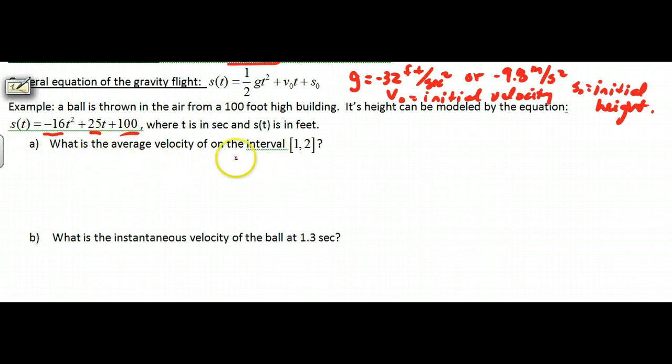Our general equation of the gravity flight would be the position function s(t) = gt²/2 + v₀t + s₀. This is the height off the ground. G is your acceleration due to gravity. V-naught is your initial velocity going, well, if it's positive, it's going up. And then s-naught would be your initial position or your initial height. So if I have a position function here, it looks like I'm using feet because I have negative 16, which is one-half of the 32. My initial velocity, it looks like I threw the ball up at 25 feet per second, and then 100 is the feet.